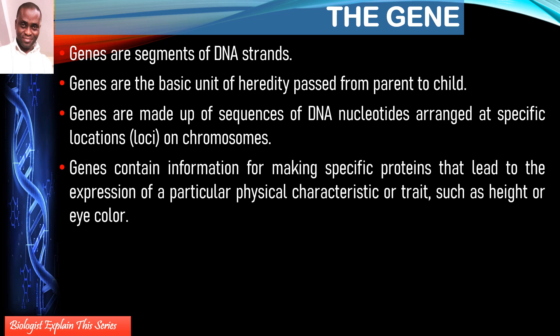Genes contain information for particular functions of a cell — this links gene structure to its role. The arrangement of the bases that make up a gene specifies the kind of protein that gene codes for. The information for protein synthesis is encoded in genes, and when this information is translated into a particular protein, those proteins control the expression of specific physical characteristics or traits.